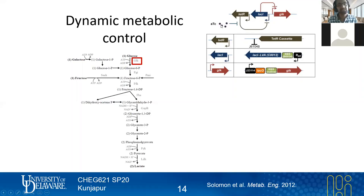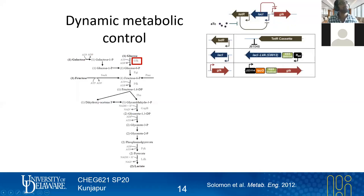With the addition of ATC, TETR allosterically binds anhydrotetracycline and de-represses LACI, allowing transcription and formation of LACI protein, which then binds the promoter and represses GLK production.